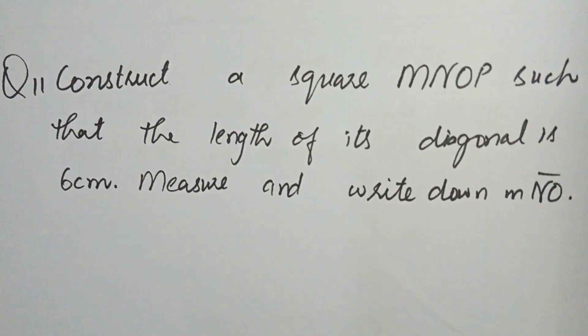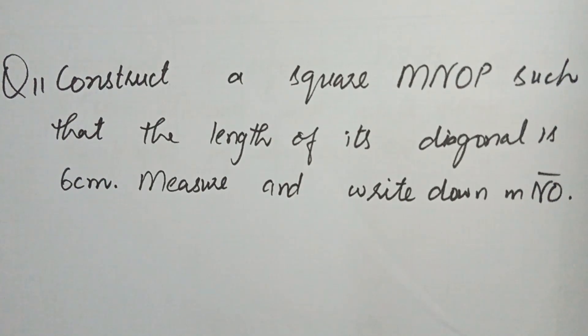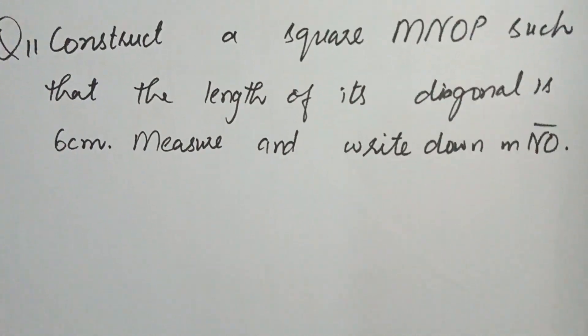Question number 11: construct a square MNOP such that the length of its diagonal is 6 centimeters, and write down the side length. In this question, the length of the diagonal is given. First, we draw a line of 6 centimeters using the ruler.